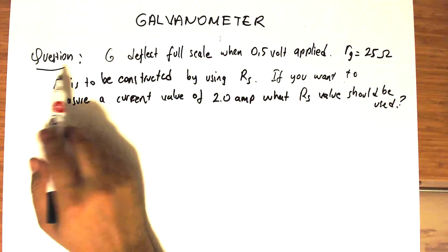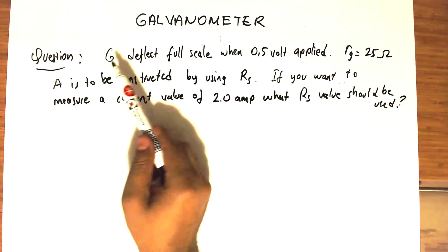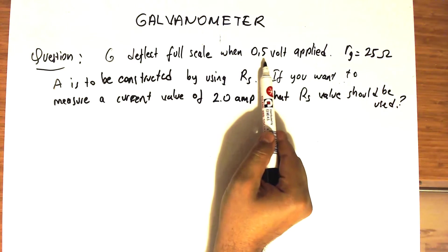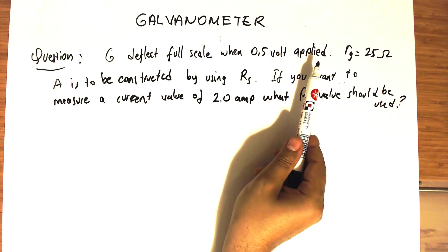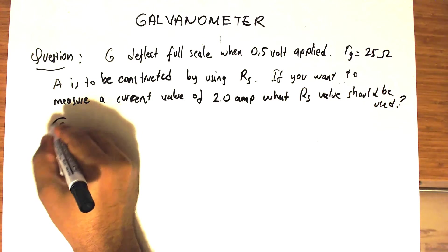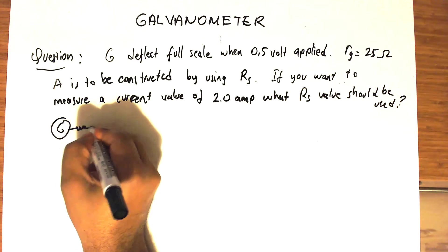Okay, so we have a problem. The question is we have a galvanometer and it deflects to full scale when 0.5 volt is applied to the terminals of a galvanometer. So you have a galvanometer with its internal resistance.